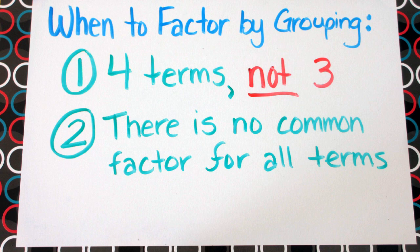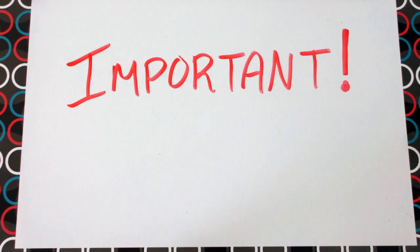Or on the flip side, you might have a common factor initially, and once you've taken that out, there's still a few things in common, and you still have four terms remaining. Finally, one key thing to look out for is the order of your terms.